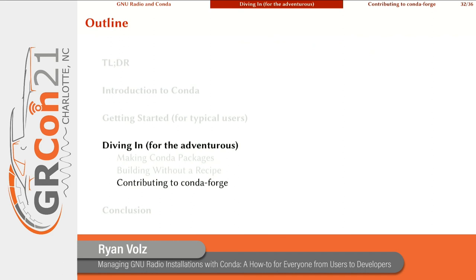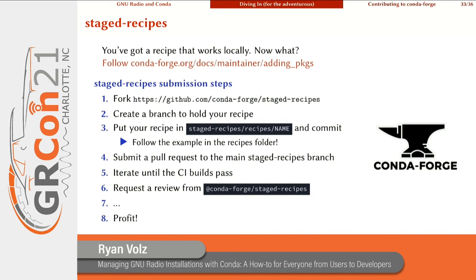Once you're comfortable with conda, the next major step is to contribute back and add your packages to conda-forge. So let's say you've got a conda recipe that works locally — now what? I recommend following the conda-forge documentation. In general, you'll submit that recipe to their staged-recipes repository by forking it on GitHub, creating a branch within your fork, putting your recipe in its own folder under the recipes directory, and committing it. Then submit a pull request to the main staged-recipes branch, iterate until the CI builds pass, and request a review from the staged-recipes review committee. If they accept and merge your package, you'll move on to maintainership.